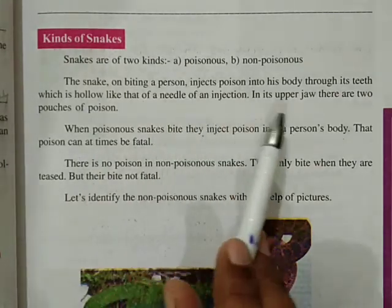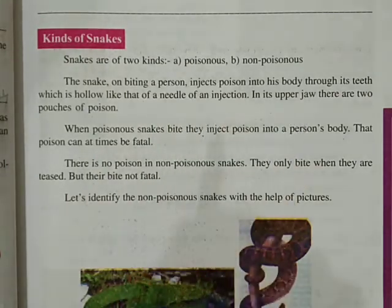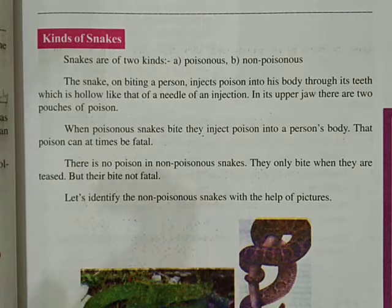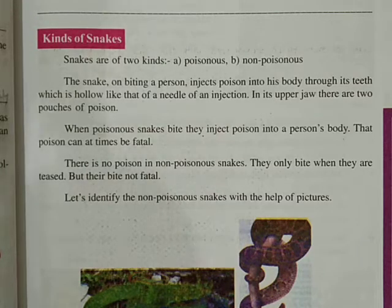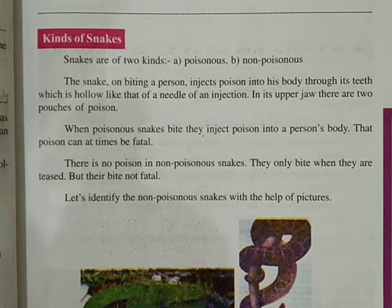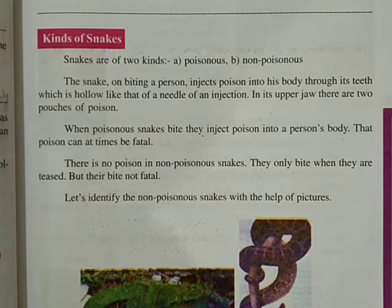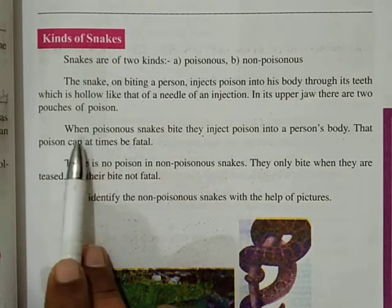Aapko yeh pata hona chahiye ki jab snake bite karta hai, to poison kis side se aata hai? Upper jaw se. Dhyan rakhenge — upper jaw, upar wale dant. Wahan par do pouches hoti hain poison ke. Thaak hai? Aur wahan par se zeher release kar deta hai.